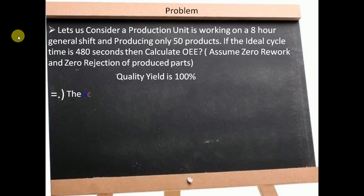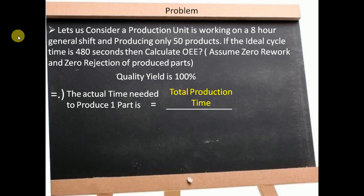The actual time required to produce one product is calculated as the total production time divided by the total parts produced. Here, the total production time is 8 hours and the quality yield is 100%. Thus, we take 8 hours in order to calculate OEE. Converted into seconds, we have 28,800 seconds divided by 50 parts. Thus, the actual time needed to produce one part is 576 seconds.